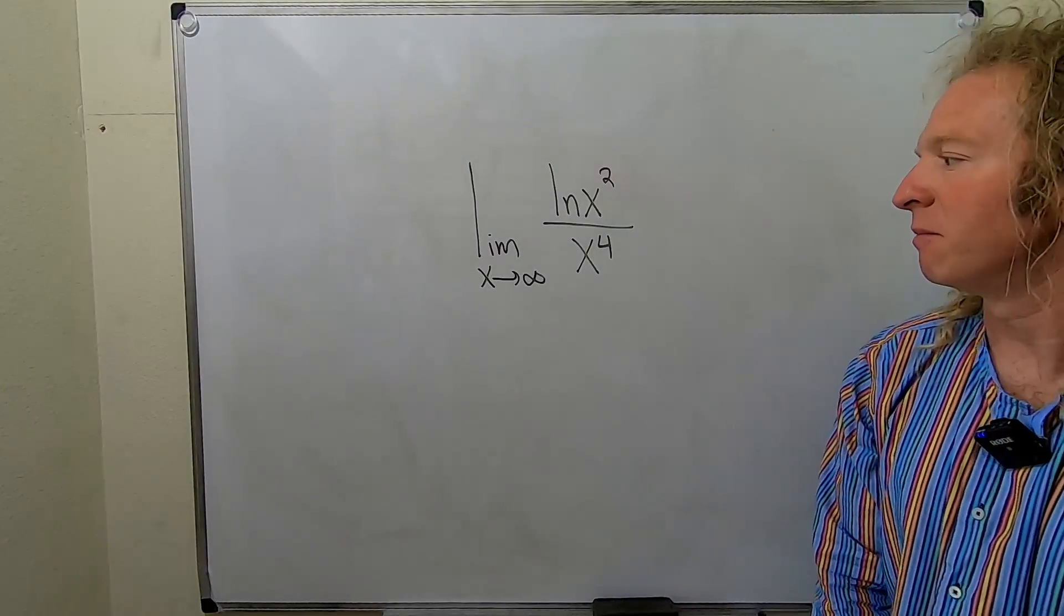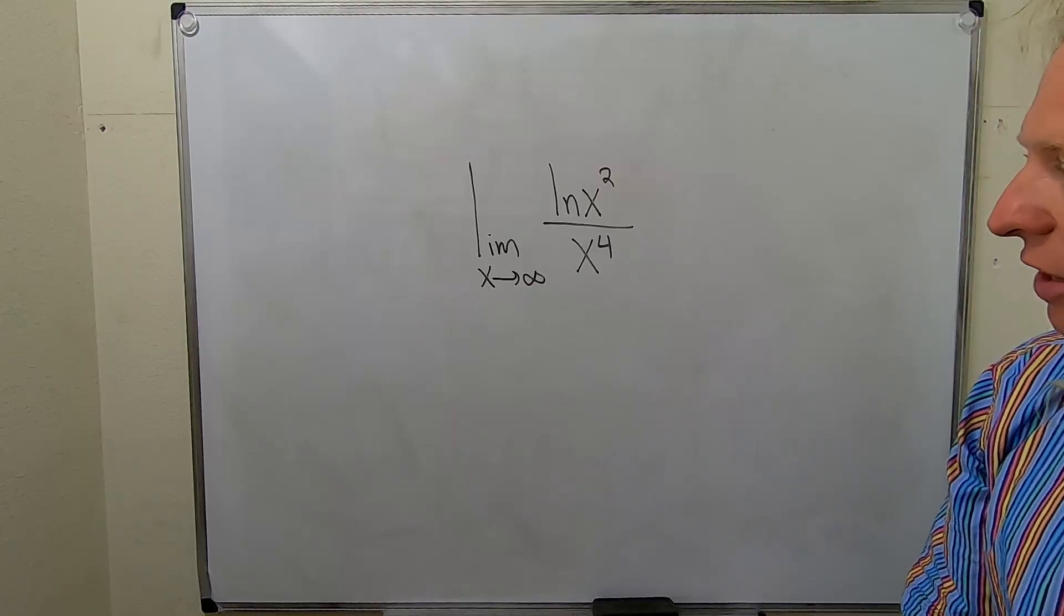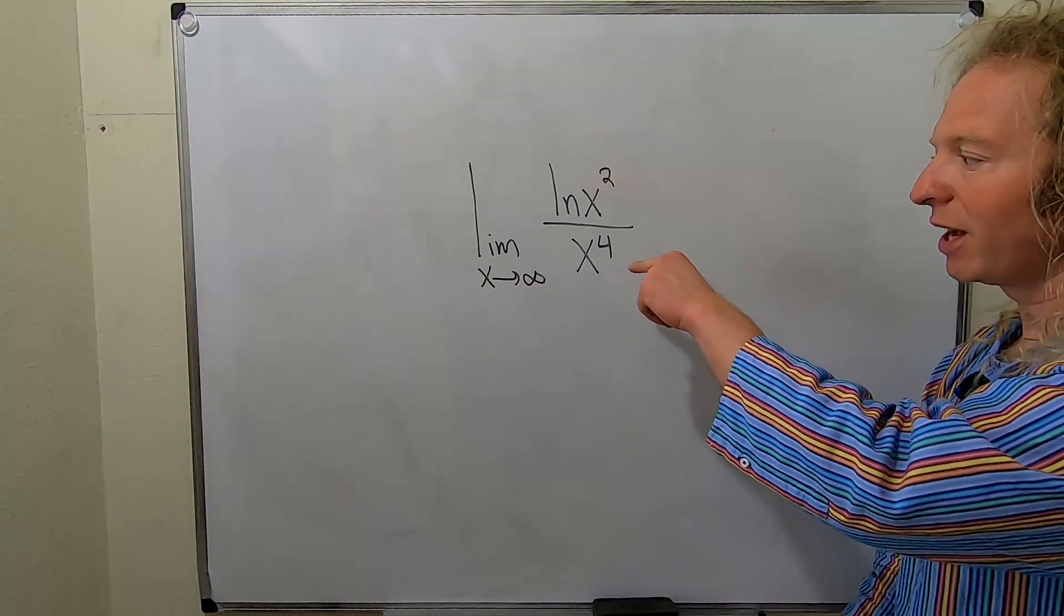Method one of doing this problem is just look at it and know the answer. The way I know that and the way you can know that is to know that this is a polynomial.